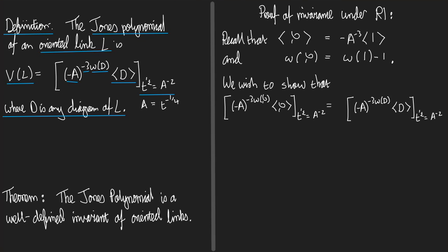So, if we define any invariant in terms of diagrams, we need to respond with a theorem that the Jones polynomial is a well-defined invariant of oriented links. I need to prove that theorem.